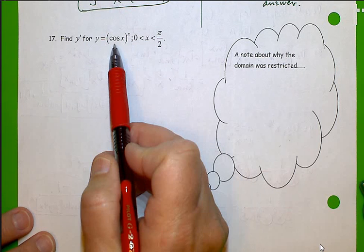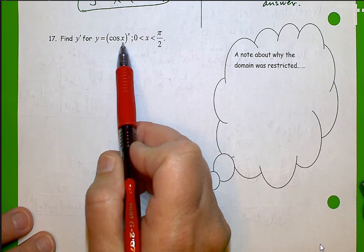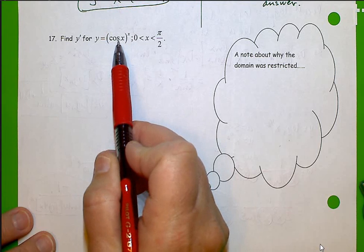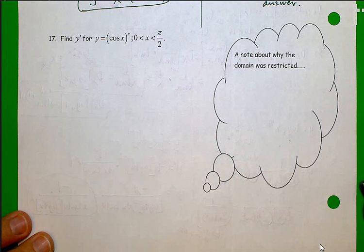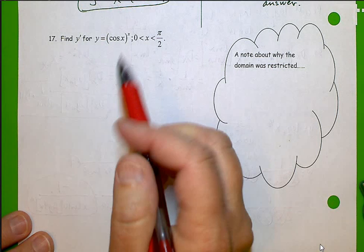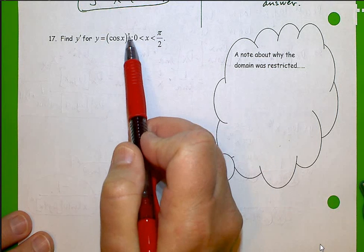So if you look at this, I do have some function with a variable in it raised to a variable power. So this is why logarithmic differentiation will be the thing to use here. I need this x down in front, basically.